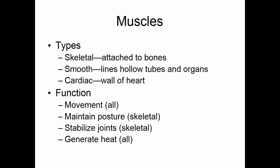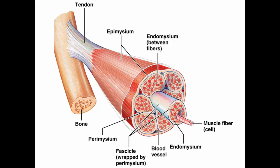All muscles generate heat when they contract. As we look at a skeletal muscle, each individual muscle cell is known as a muscle fiber, and each muscle cell is surrounded by a connective tissue covering known as the endomysium. Muscle fibers are bundled into groups called fascicles, and fascicles are wrapped in more connective tissue known as the perimysium. The muscle itself is made up of a number of fascicles bound together by another connective tissue covering known as the epimysium. Fibers from the endomysium, perimysium, and epimysium come out at the end of the muscle and form the tendon.